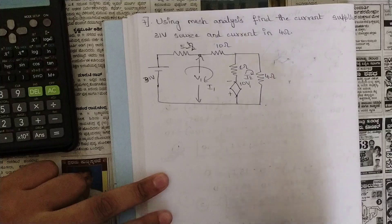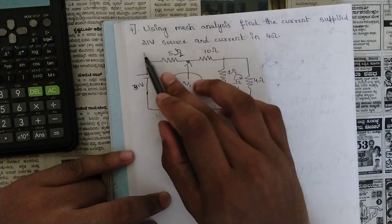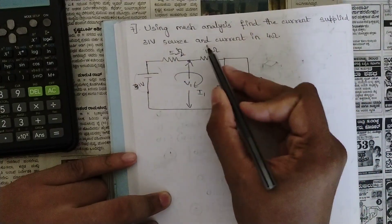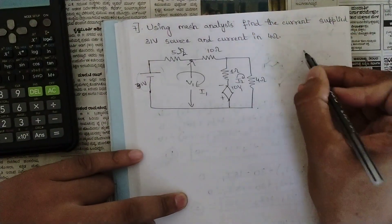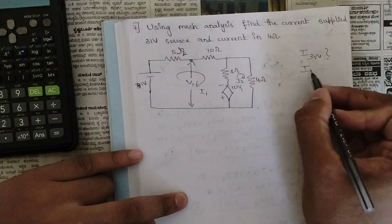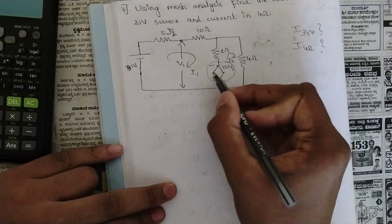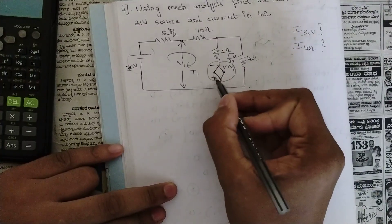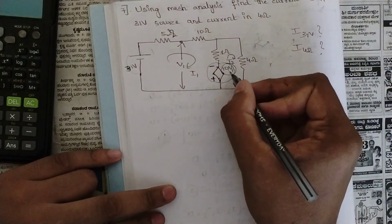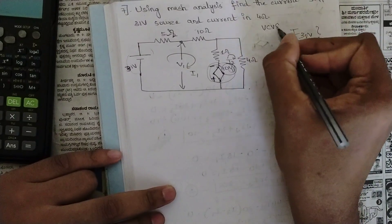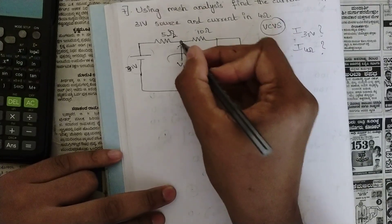This is the seventh question of mesh analysis. Let's solve it now. The question is: using mesh analysis, find the current supplied by the 31-volt voltage source and the current in the 4-ohm resistor. We should find i of 31V and i of 4Ω. In this circuit we have one dependent source — it has minus and plus terminals with value 10v1, so this is a voltage-dependent voltage source, VCVS.